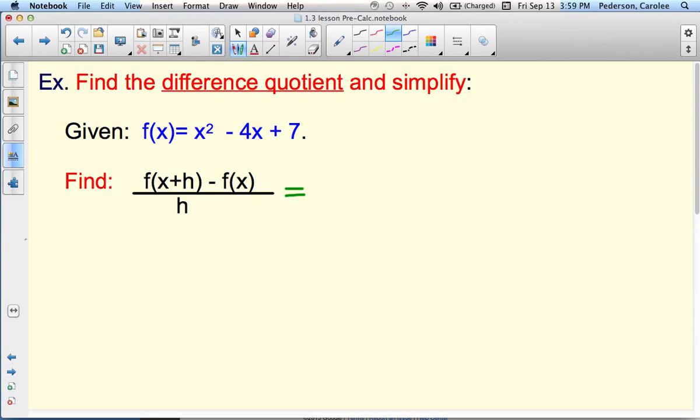So the first part is saying f of x plus h. So wherever there's an x in this function, we're going to replace that x with x plus h. So I'm first just doing this green part of f of x plus h. So I replace this x with x plus h, and then I still have the square, minus 4, replace that x with x plus h, and then plus 7. So there's my first piece.